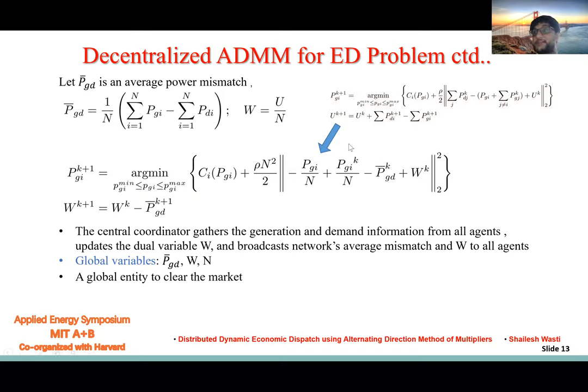Remember, this is again still a global variable. For this optimization problem, we have PGI, W, and N as global variables. If we have a dual updater, then to interpret in the language of optimization, the dual variable W here is constantly pulling the decision variable towards the optimum value.